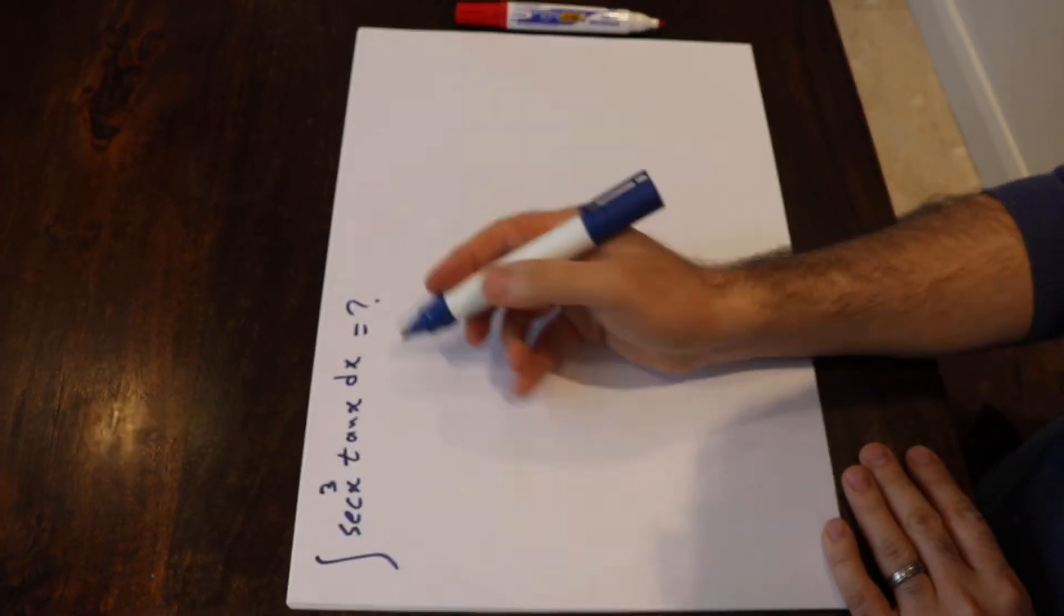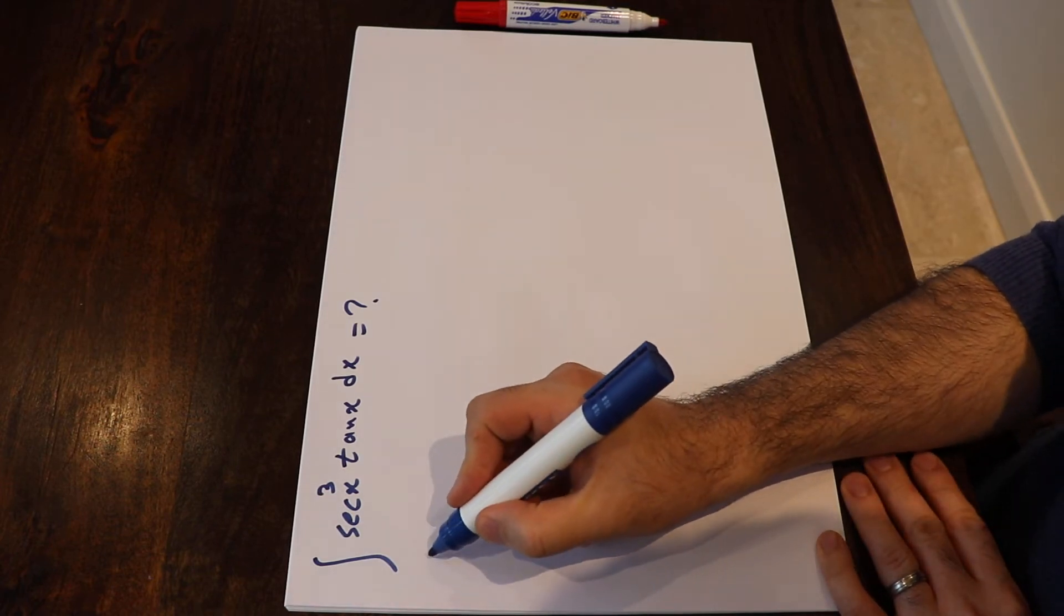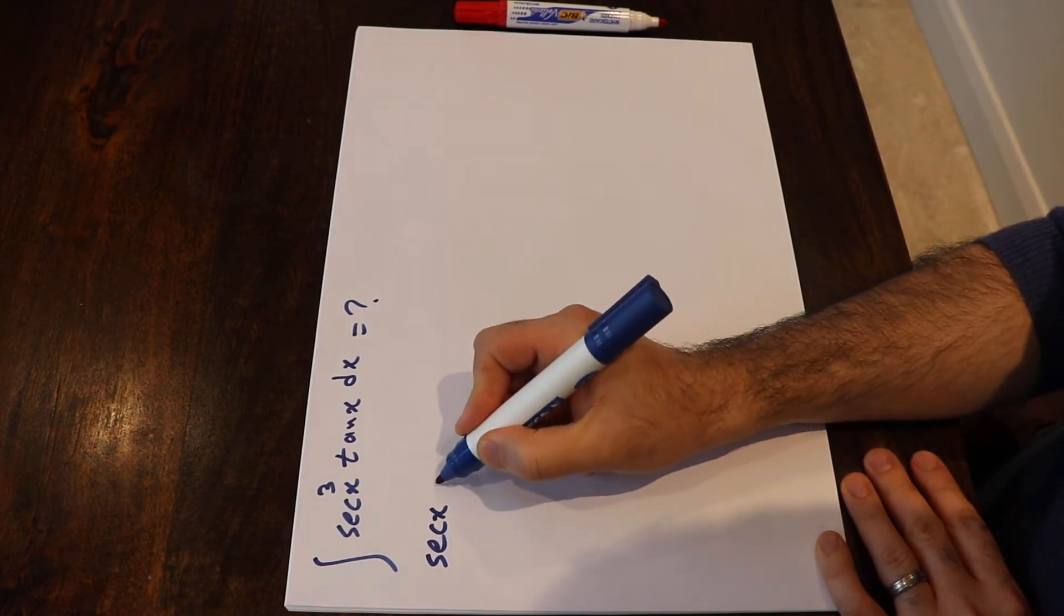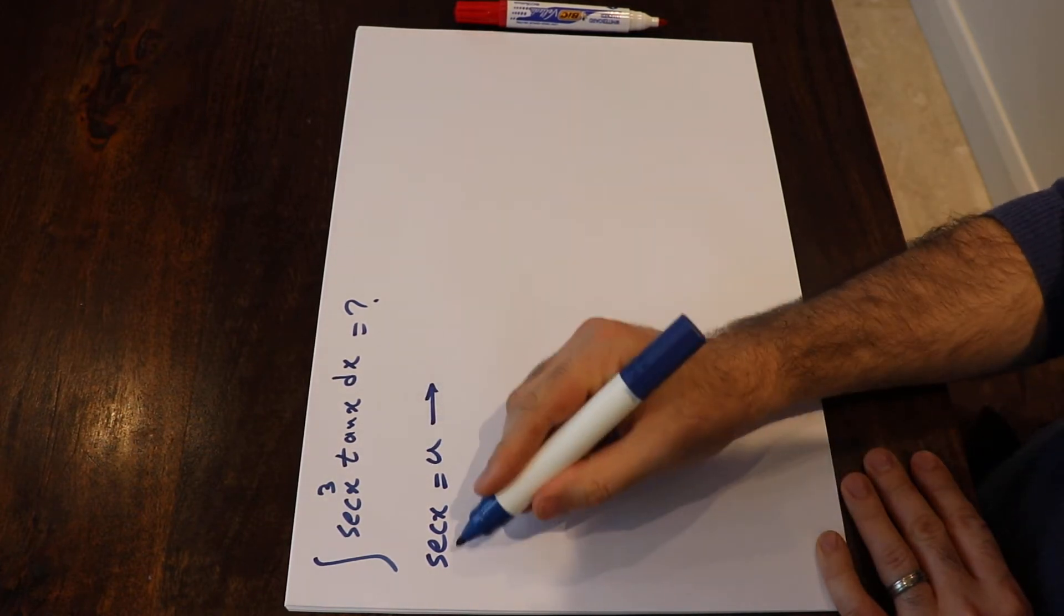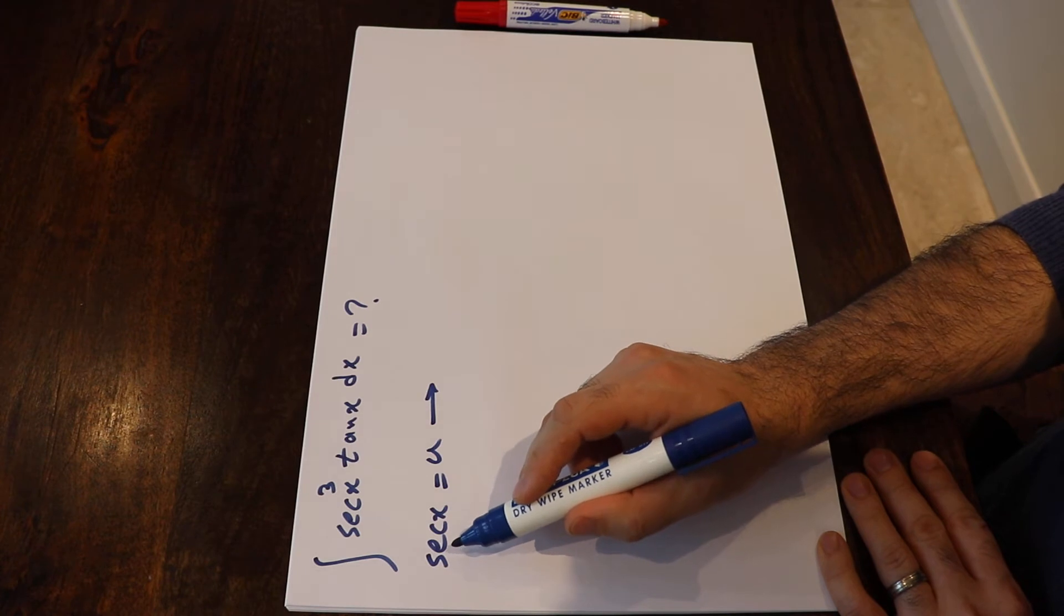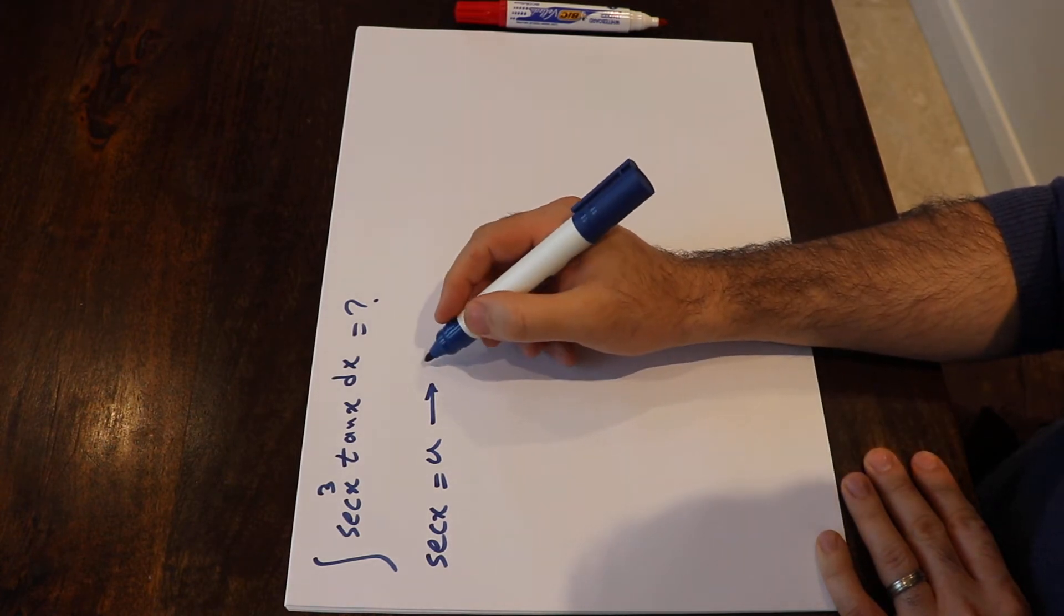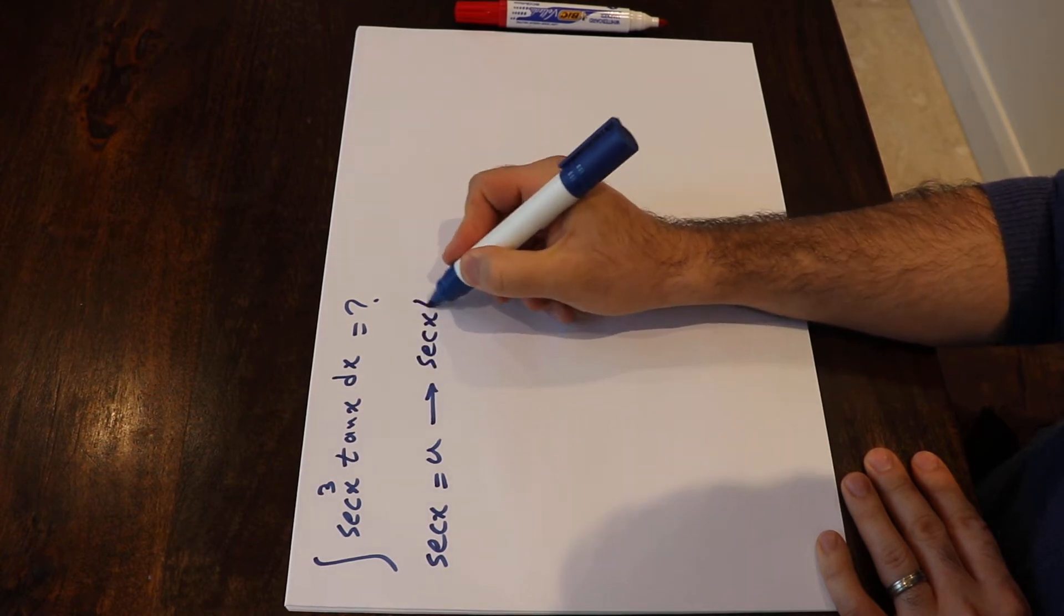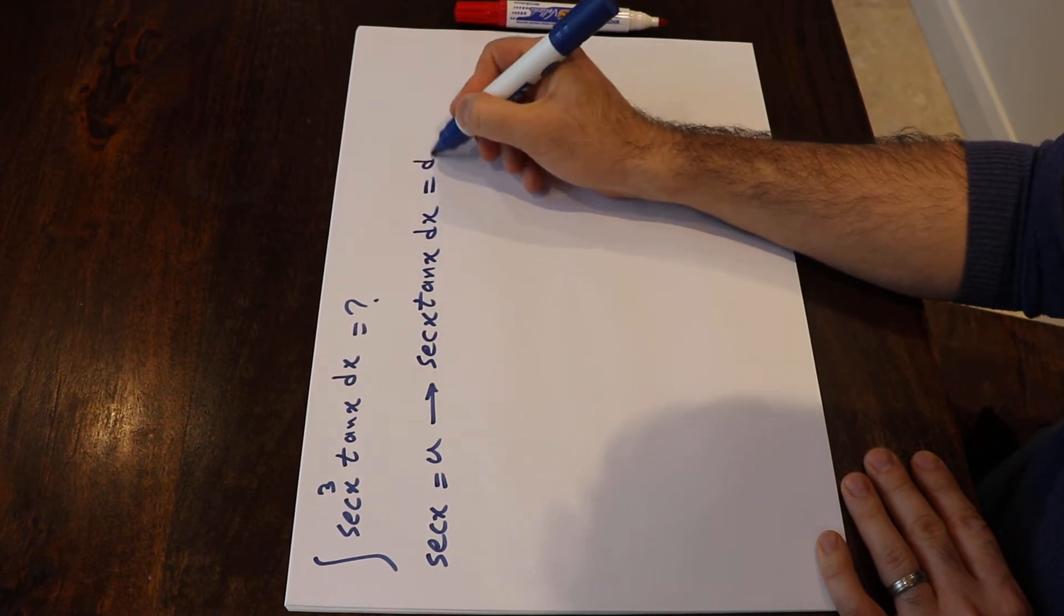To solve this integral you have to use the substitution rule. In other words, if you define sec x as u and if you take the derivative from each side of this equation, that will be equal to... we know that the derivative of sec x is equal to sec x tan x dx, that will be equal to du.